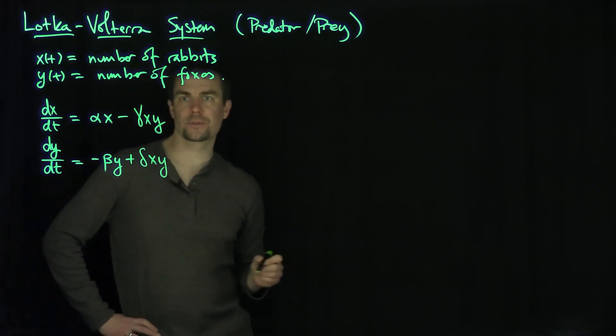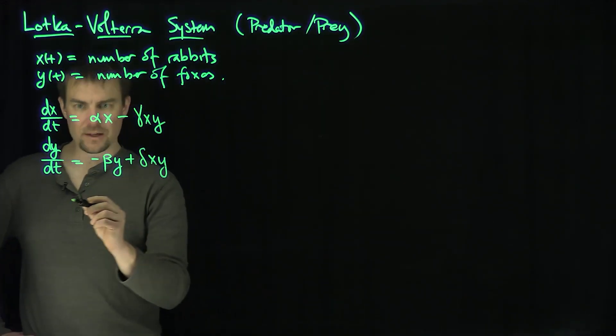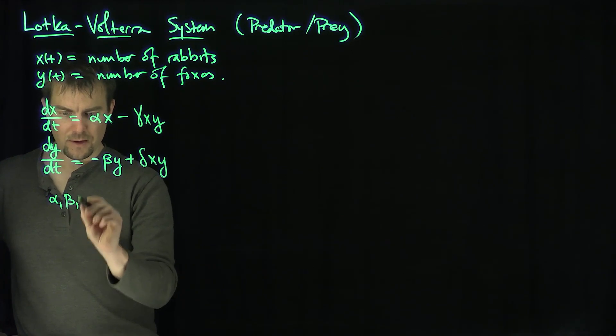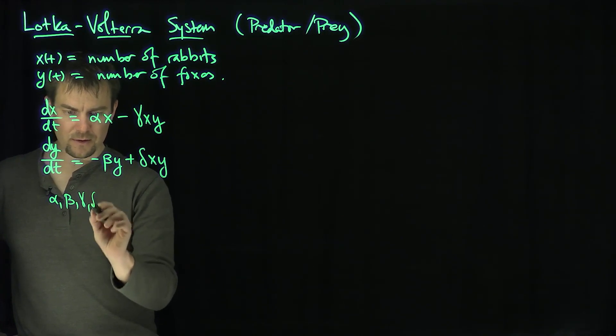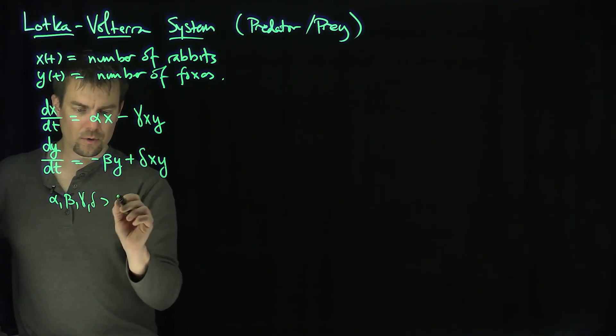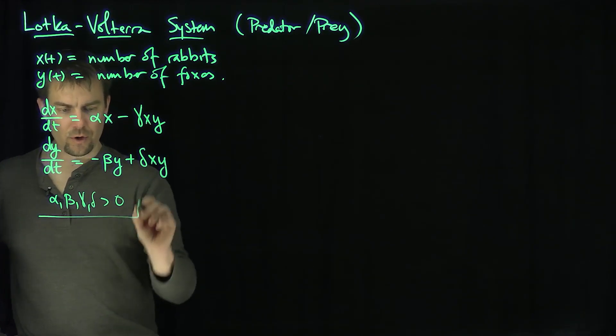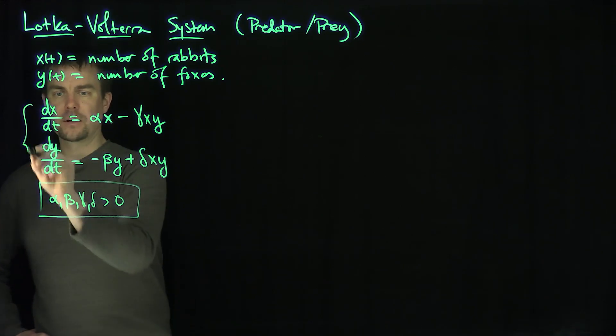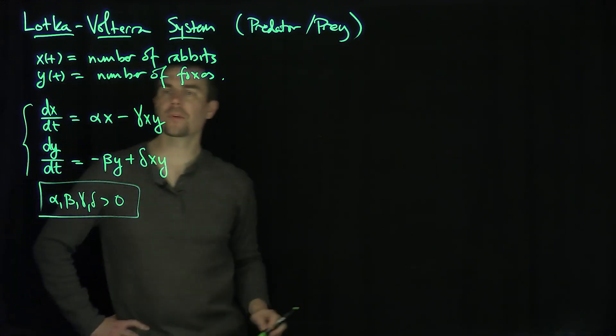This is the Lotka-Volterra system. Here alpha, beta, gamma, and delta are all greater than zero real numbers. That's our Lotka-Volterra system.